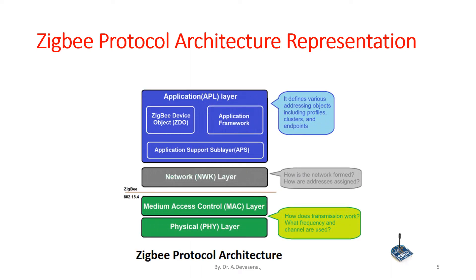In this ZigBee protocol architecture, the physical layer as well as the medium access control layer describe how transmission works, what frequency and channel are used. In the network layer, ZigBee discusses how the network is formed and how addresses are assigned. In the application layer, the interface layer defines various addressing objects including profiles, clusters, and endpoints.